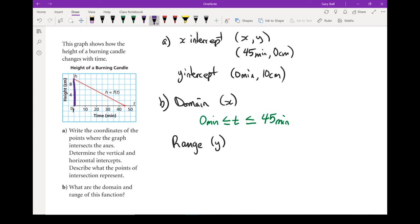My range is this piece right here. And that range can be anywhere between zero and 10. So we're looking at zero centimeters as my lowest point, using the variable h because we're talking about the height of a candle. And it goes up to a height of 10 centimeters. There's my domain and range.